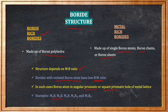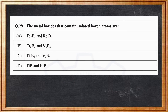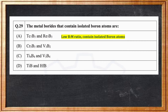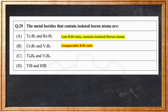Some examples of isolated boron atom structures are M4B, M3B, M2B, M5B2, and M7B3. Analyzing the question: in option A, Tc7B3 and Re7B3, the B/M ratio is lower, which means they contain isolated boron atoms. In option B, Cr5B3 and V3B2, the boron-to-metal ratio is comparatively almost similar — approximately 5:3 and 3:2.